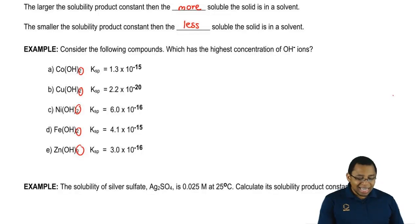That means just look at the Ksp value. We're going to say the one that has the highest Ksp value would be the most soluble. Which means it breaks up into the most ions. And the one that breaks up into the most ions would have the highest concentration of OH- ions.